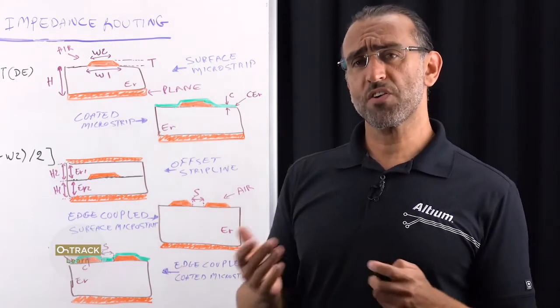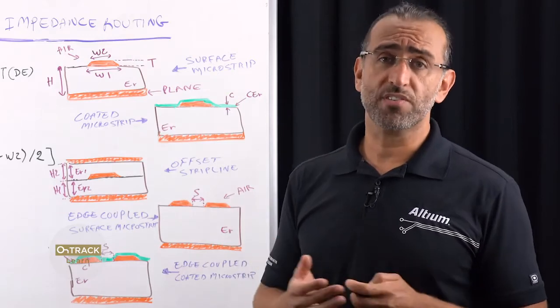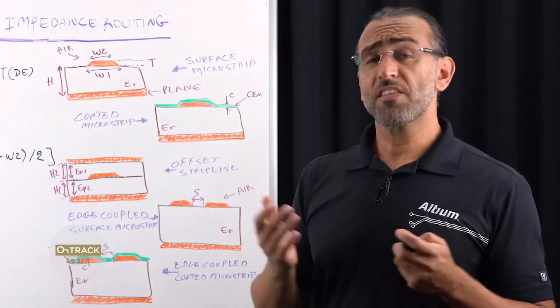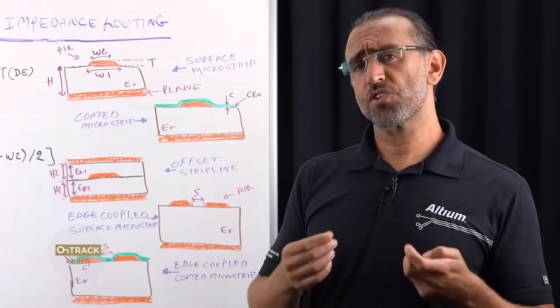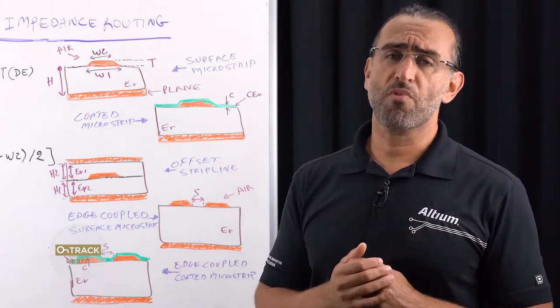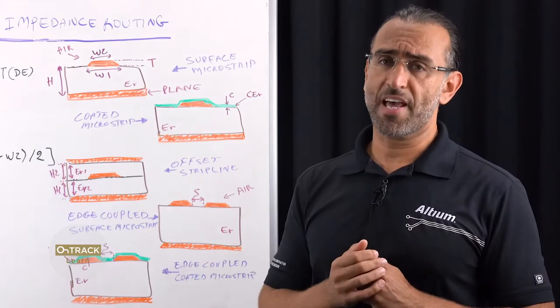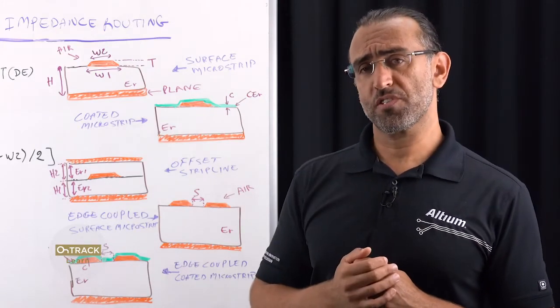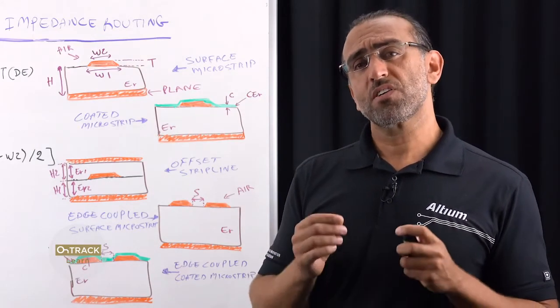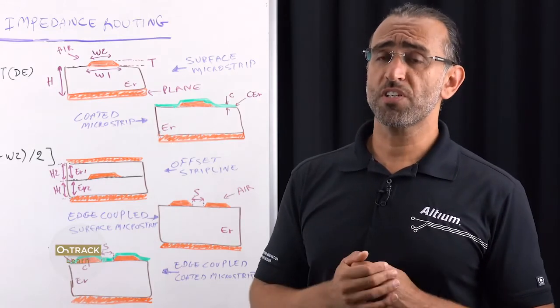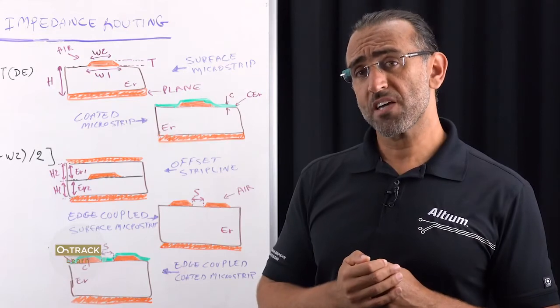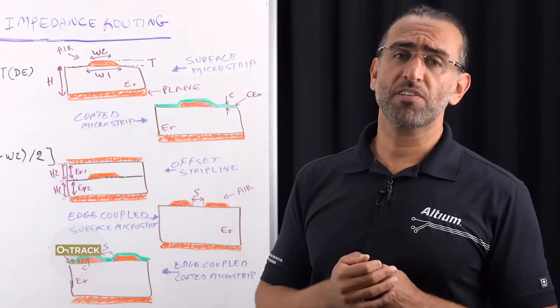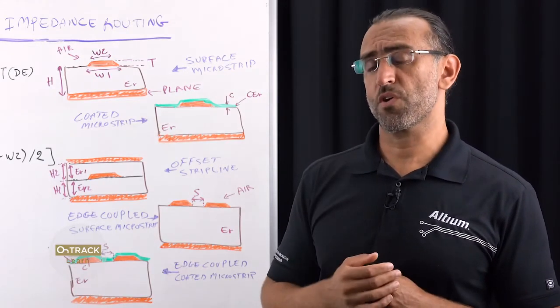So with more boards carrying high-speed signals, more traces are requiring impedance control. This control needs to be accurate, and it's best if it can be achieved with a solver that precisely represents the properties of your actual layer stack, including accurate material properties. And while it's a good start to have an integrated solver within your tool, it's still good to communicate with your fabricator to ensure they have the capabilities to meet your design-specific requirements.